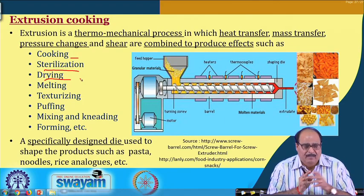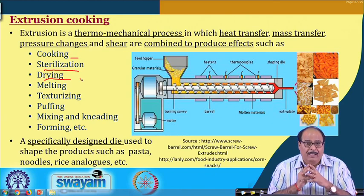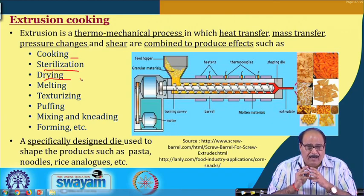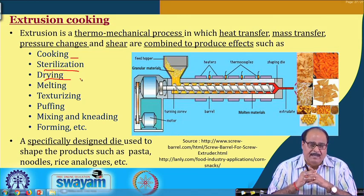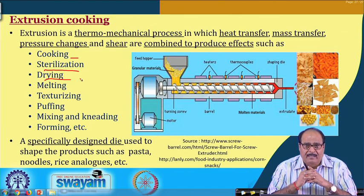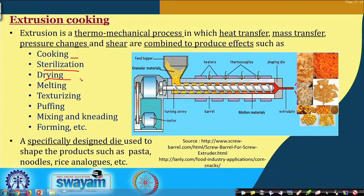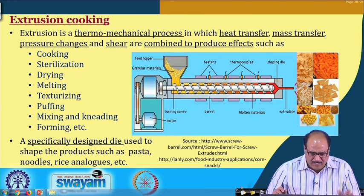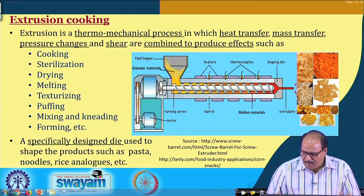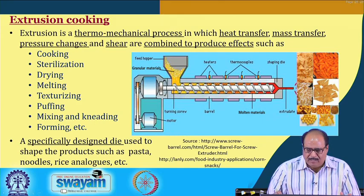So many effects we can get in the product by having a proper combination of the characteristics of the material, characteristics of the extruder process variables and system variables. A specially designed die is used to shape the product such as the form of pasta, noodle, rice analogs etcetera, and a variety of products in a variety of shapes and sizes are produced using this technology.